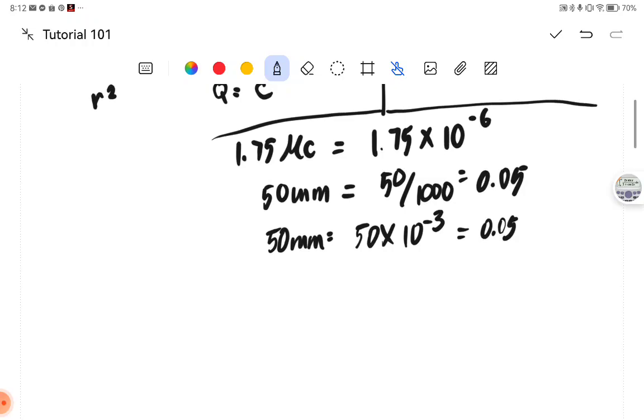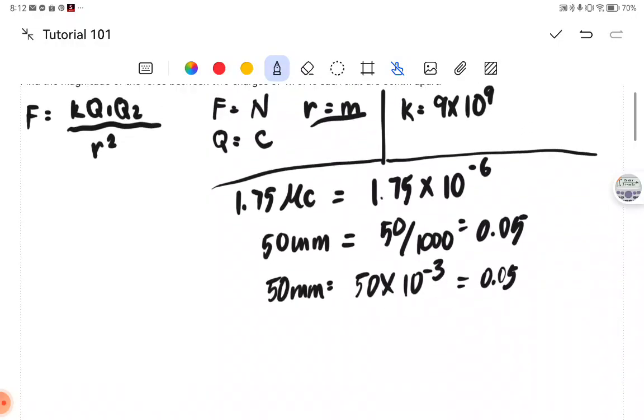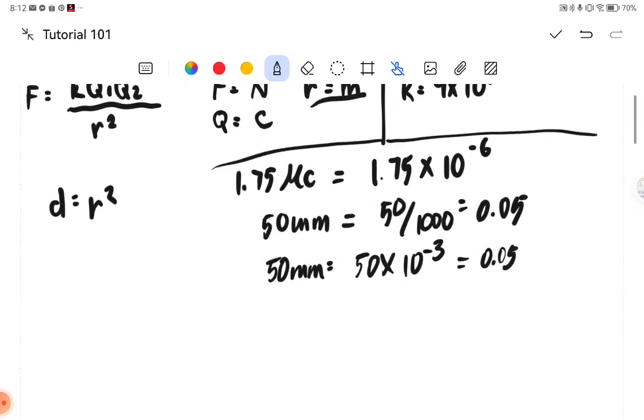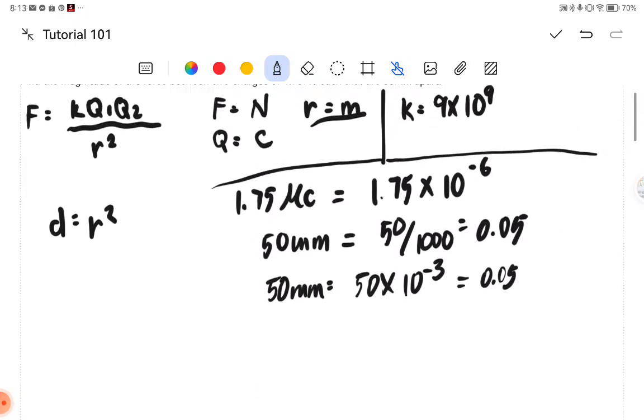So as we all know, our distance is just simply R squared. So our R squared is simply R distance, which is 0.05. So let's plug in our known value.